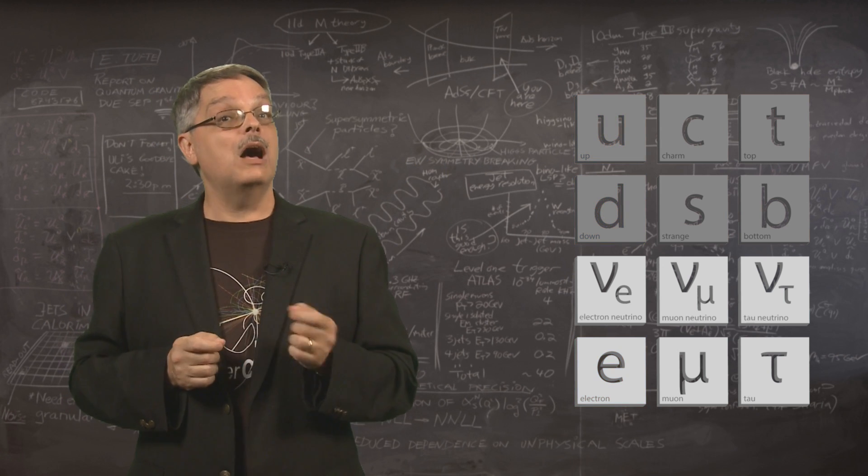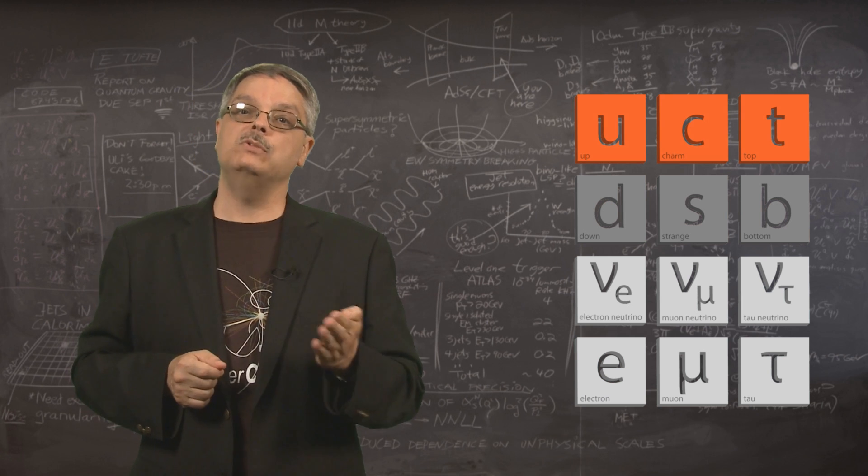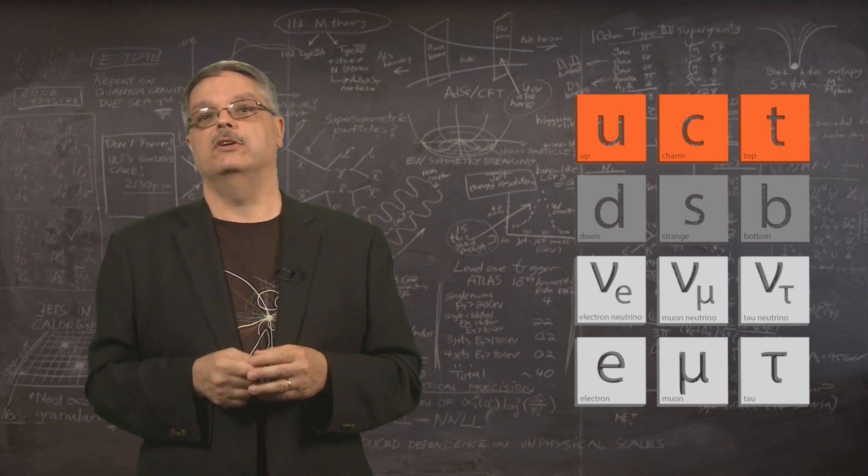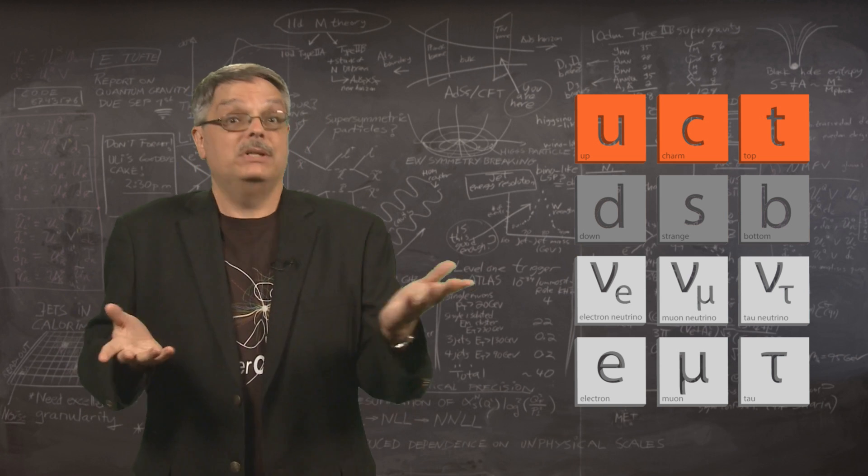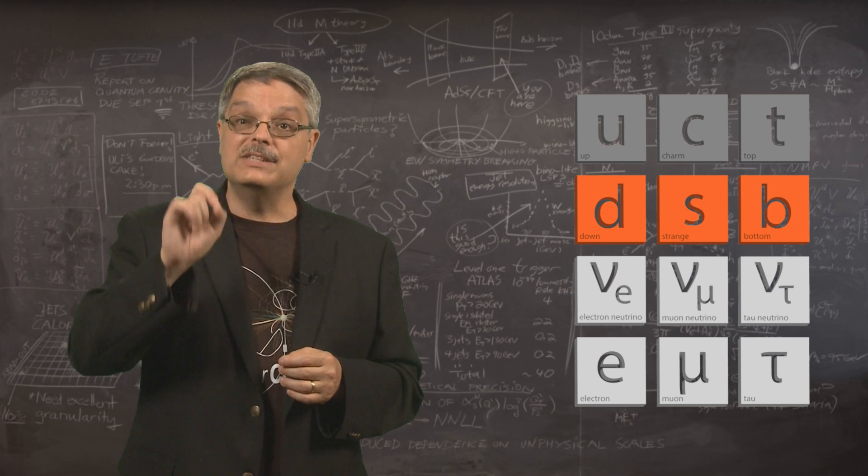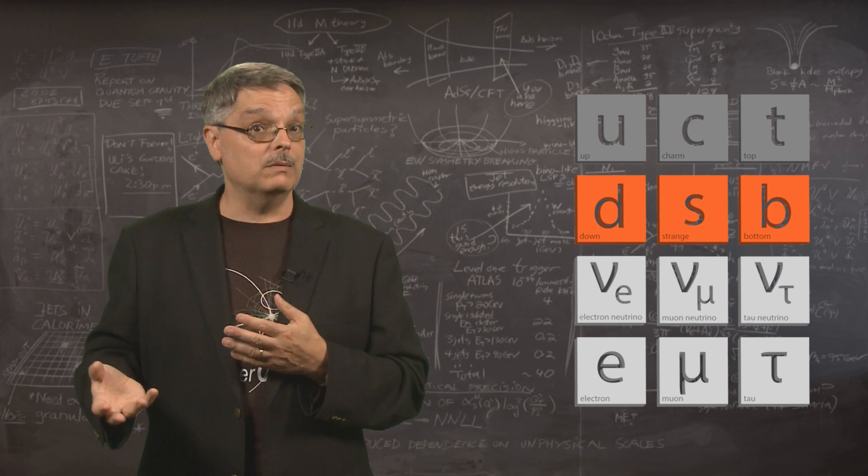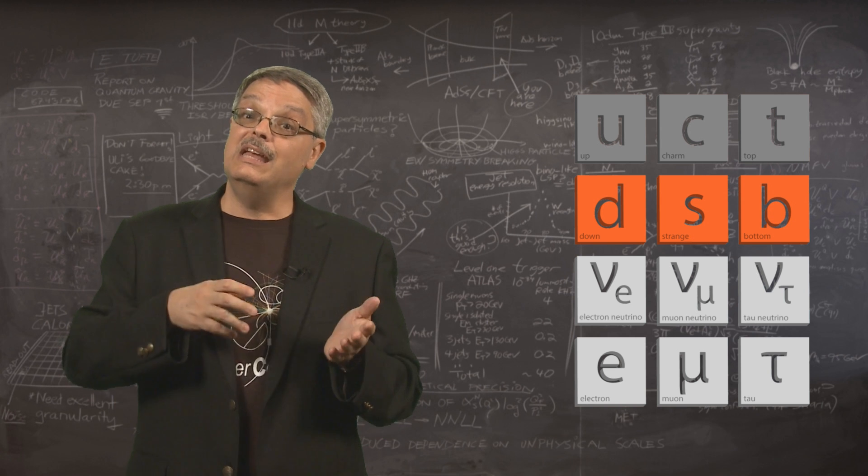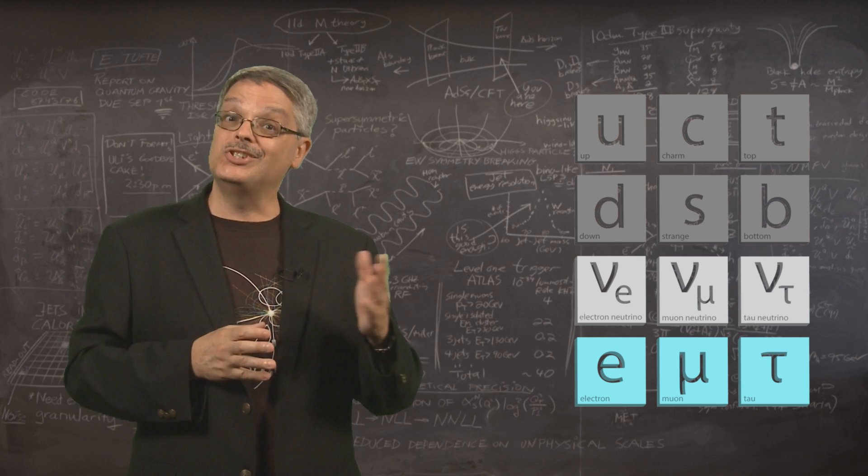It turns out that there are commonalities in the quarks and leptons. The charm quark has the same charge as the up quark, but it's heavier. Similarly, the top quark has the same charge, but it's heavier still. In the same way, the strange and bottom quark have the same charge as the down quark, with the ones on the right having a higher mass.